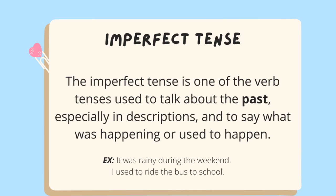We've already looked at the preterite tense, now we're looking at the imperfect tense. The imperfect tense is one of the verb tenses used to talk about the past, especially in description, and to say what was happening or used to happen.